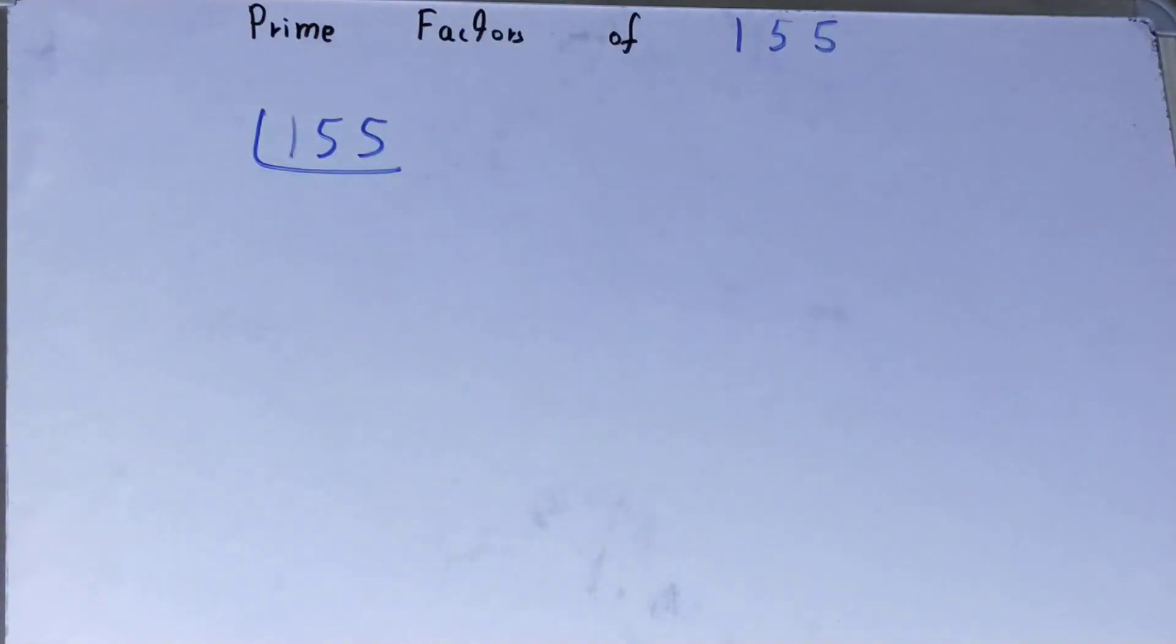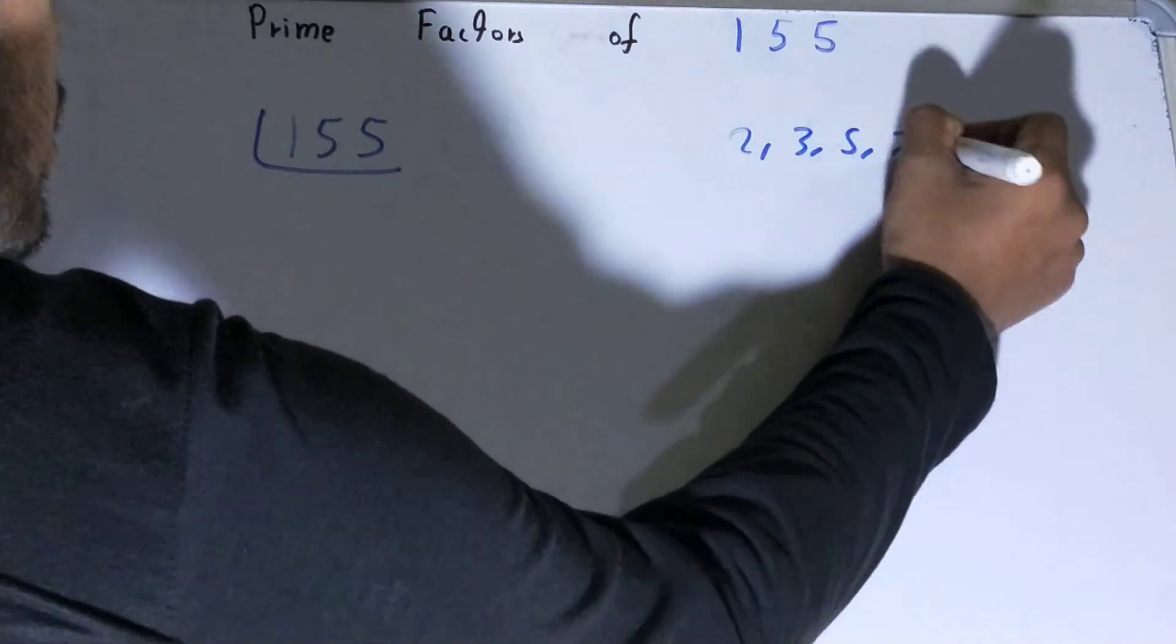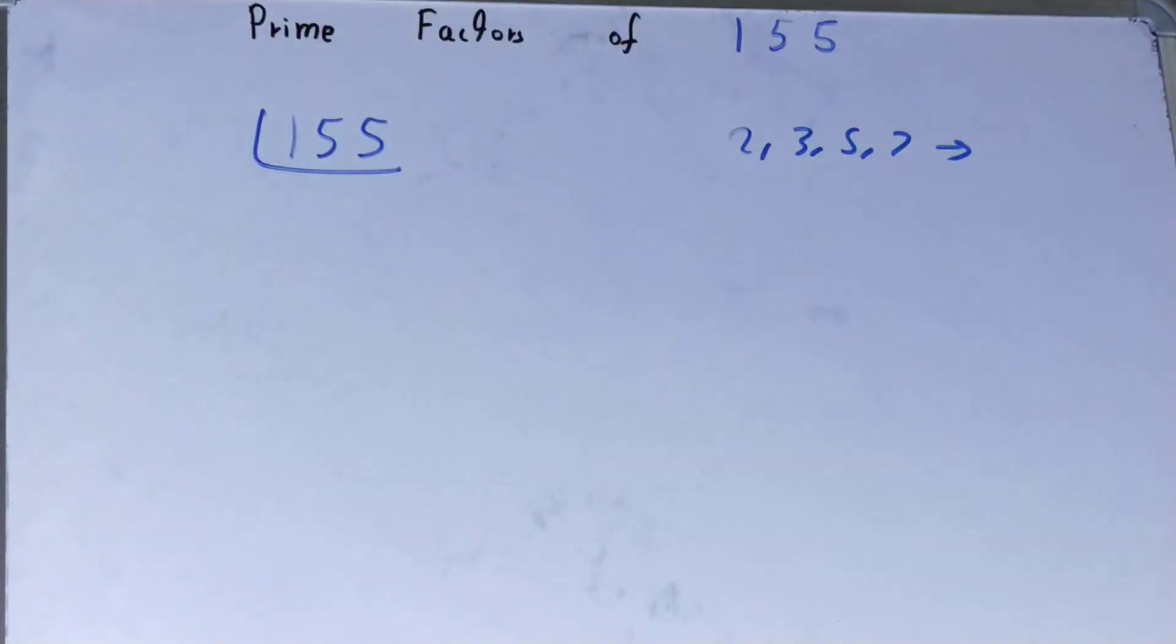You must have an idea about what prime numbers are. Prime numbers are numbers that are divisible by themselves and one only, like 2, 3, 5, 7, and so on. All right, so we'll start with the lowest prime number that we have, that is 2.